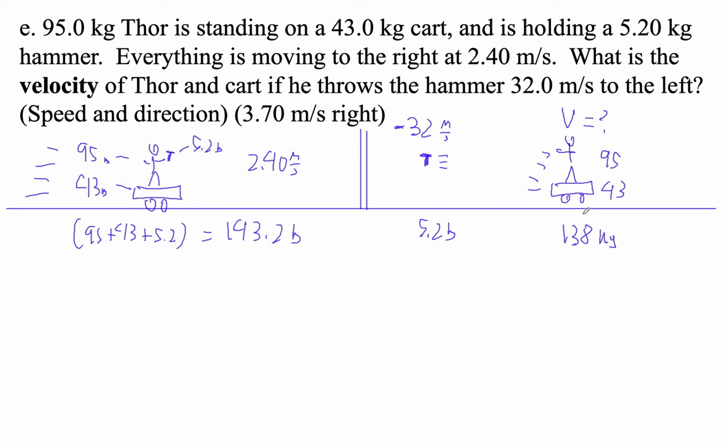Now the total momentum has to be the same. So what we're going to do is we're just going to put an equals here and add up the momentum. So this total momentum is m times v. So it's 143.2 times 2.4. That's positive because it's to the right.